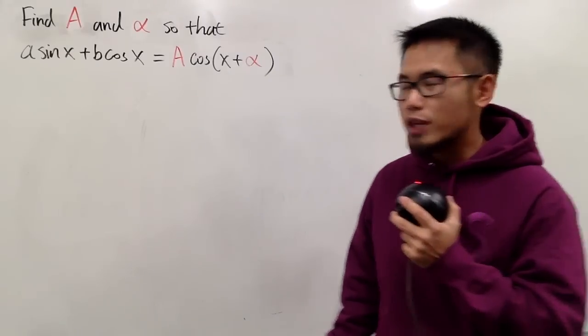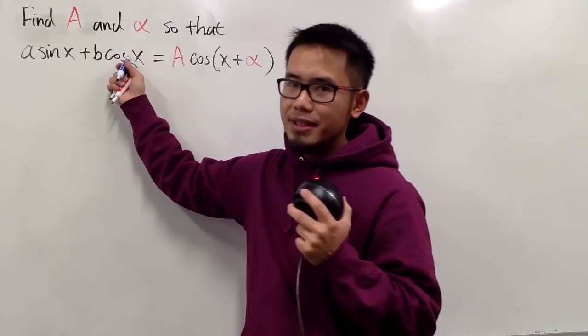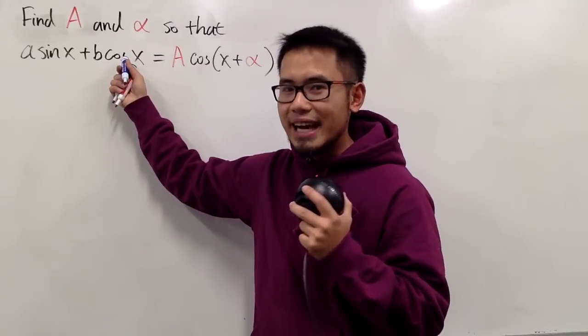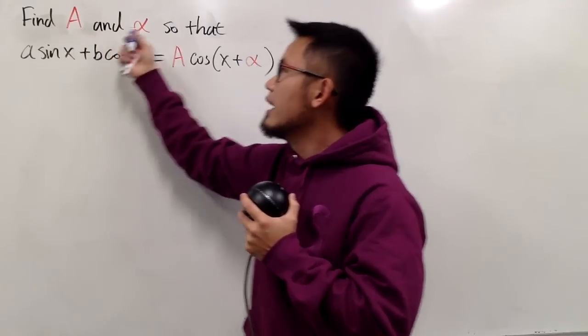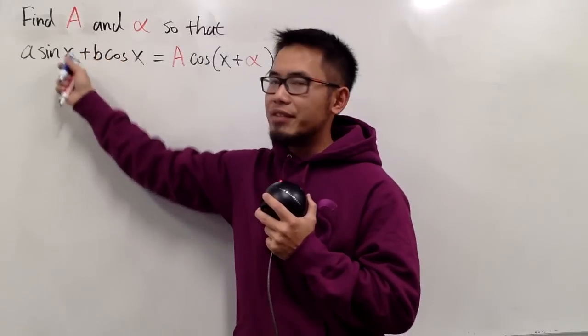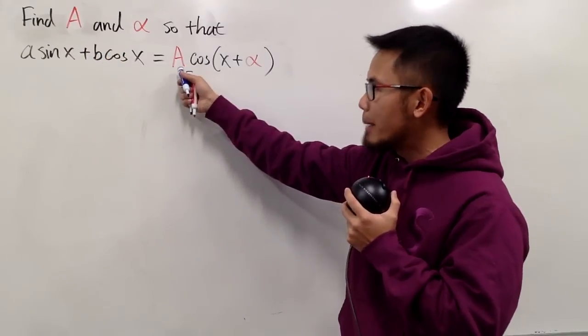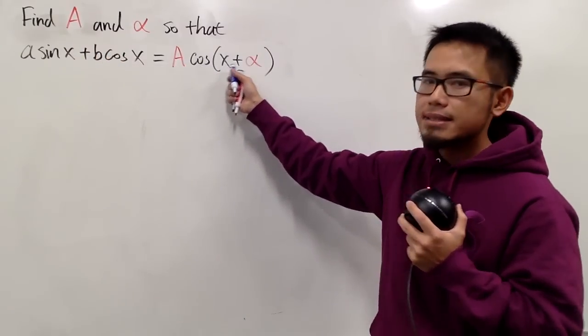In many situations, we may have to encounter the expression a times sine x plus b times cosine x. And the truth is that we can actually find some capital A and alpha so that the left-hand side is equal to capital A times cosine of x plus alpha.